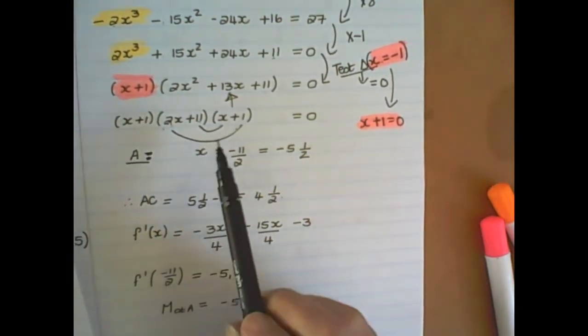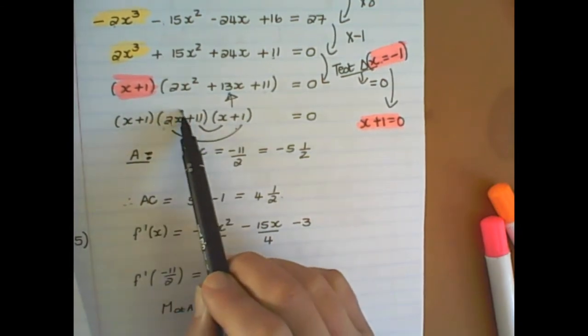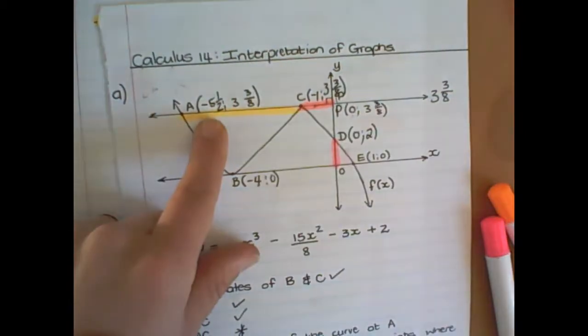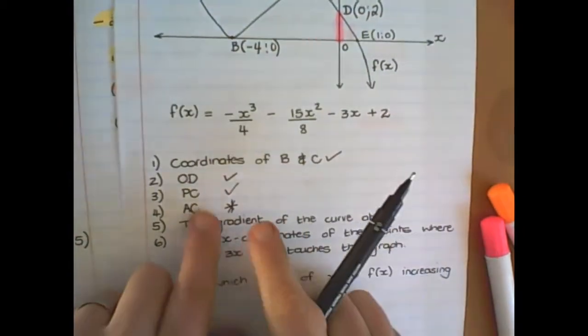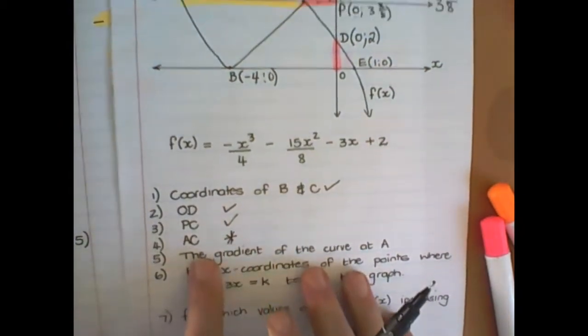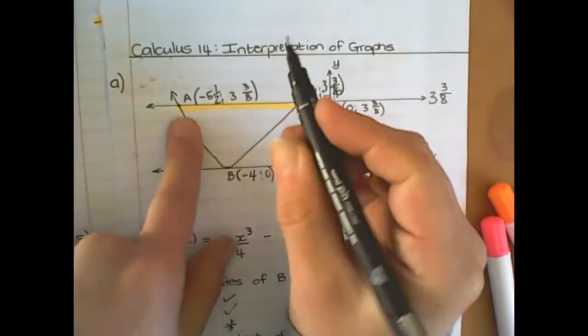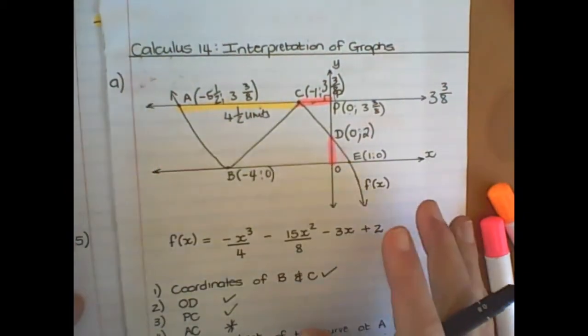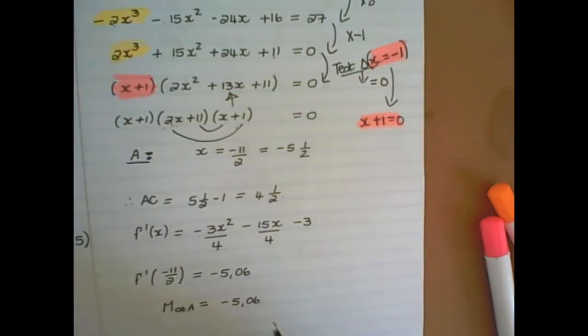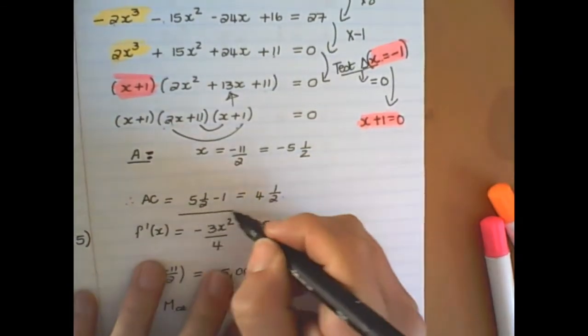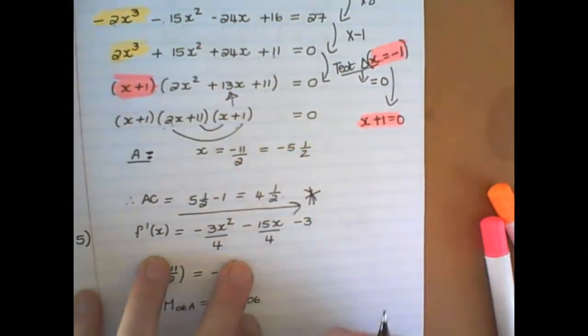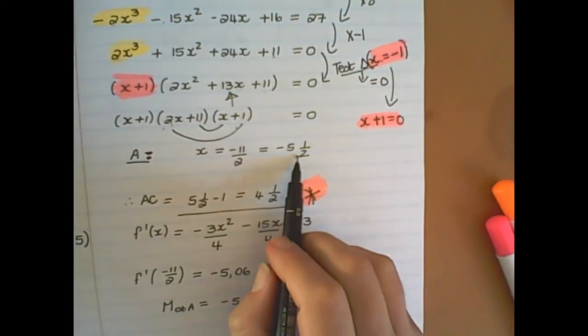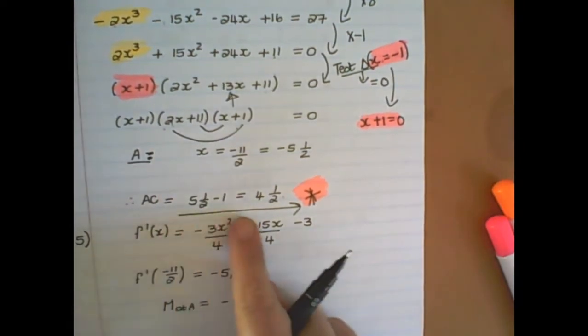So for the a value, then, it's this bracket, 2x plus 11, which you've solved. And then the x value here is negative 5 and a half. Okay? But notice the question said the distance between AC. And the distance between AC is 4 and a half units. Right? It's not a negative value, and it's not 5 and a half. It's 4 and a half units. And that's where people normally lose marks. They forget to answer the actual question. They get to this part, and then they think they're done. So always make sure that you have answered the question.